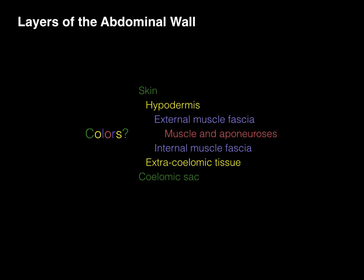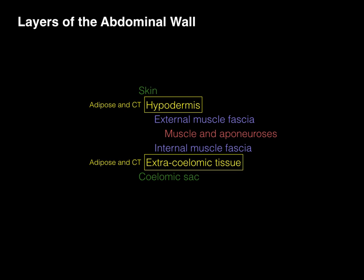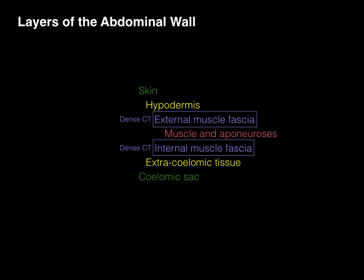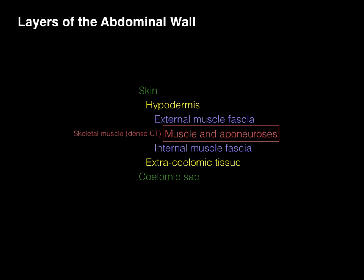There's a definite color theme going on. The colors represent a symmetry in the histology of the tissues found in these seven layers. For example, the skin and the solomic sac are epithelium with some connective tissue. The hypodermis and extrasolomic tissue contain adipose tissue and connective tissue. The external and internal muscle fascia is dense connective tissue, forming a sandwich around the muscle and aponeuroses — skeletal muscle with densely arranged connective tissue making up the aponeuroses. The colors represent that histological symmetry going from external to deep.